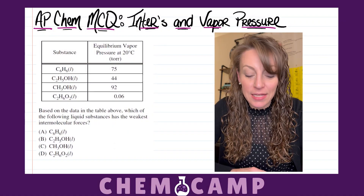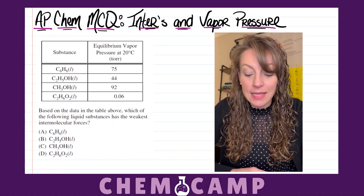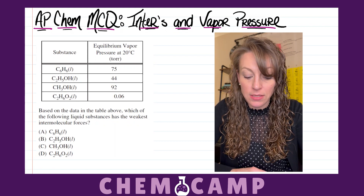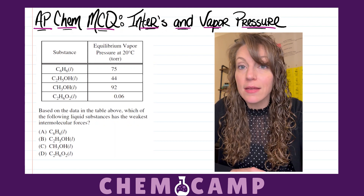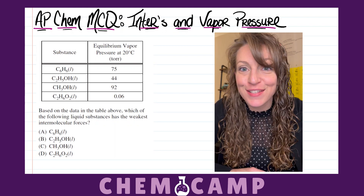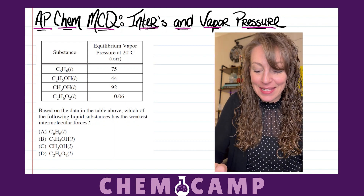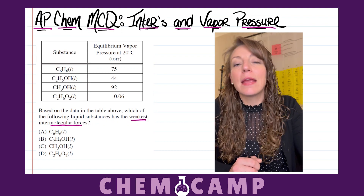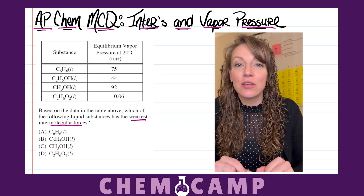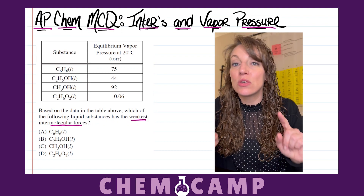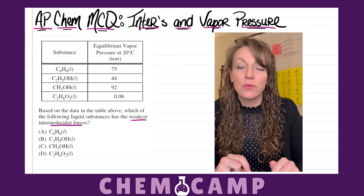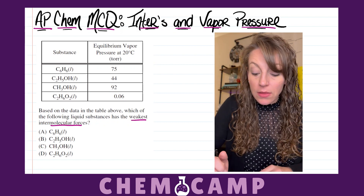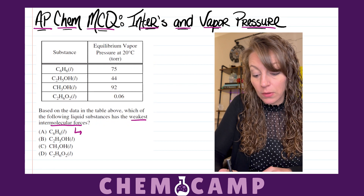The problem reads: based on the data in the table above, which of the following liquid substances has the weakest intermolecular forces? So we're going to focus on the weakest intermolecular forces, keeping in mind that an intermolecular force is the attraction between two different molecules in a sample of matter. If they're the weakest, then they're going to be very easily broken.